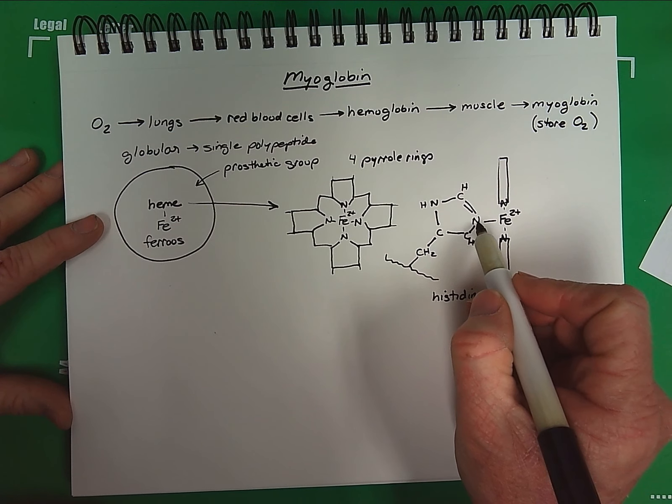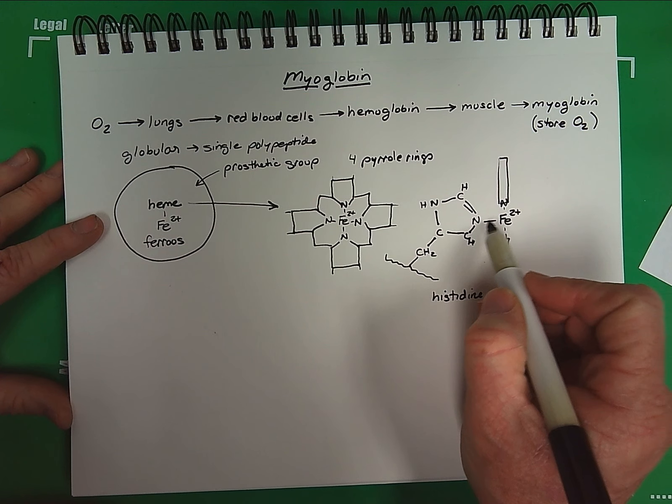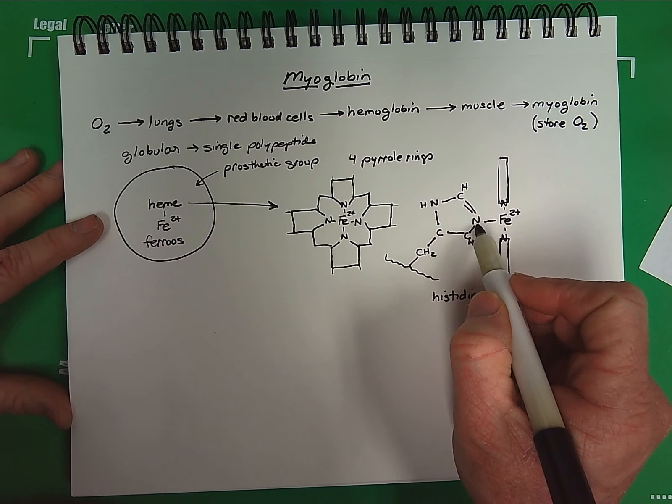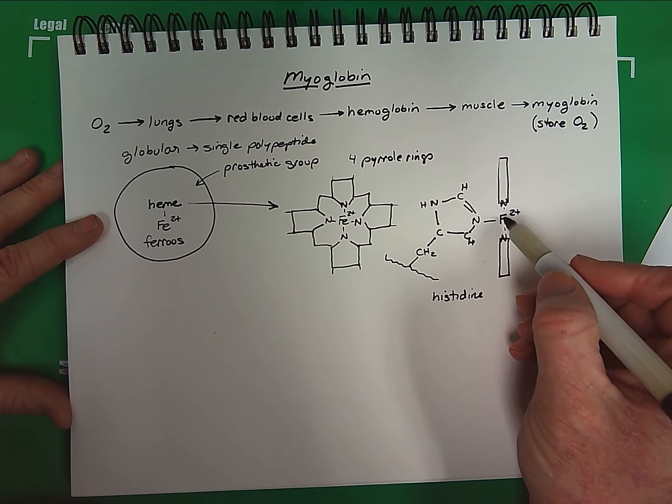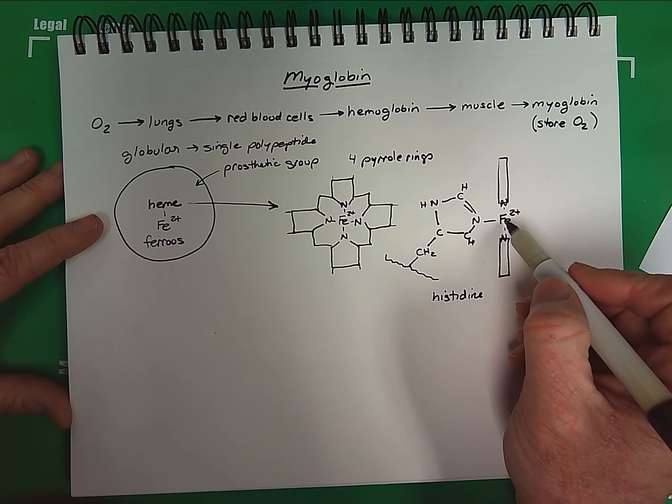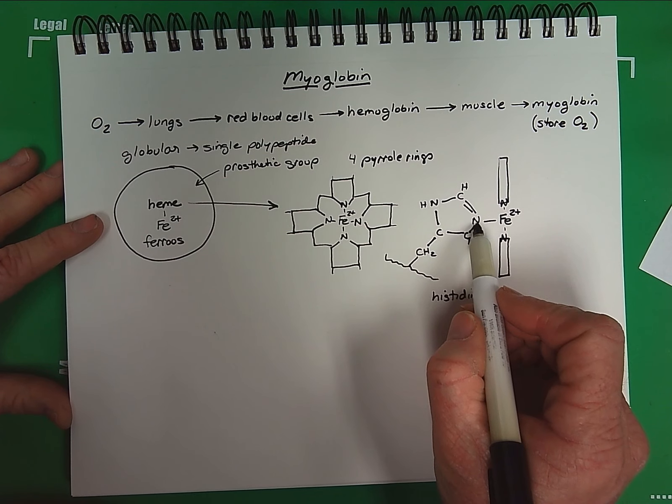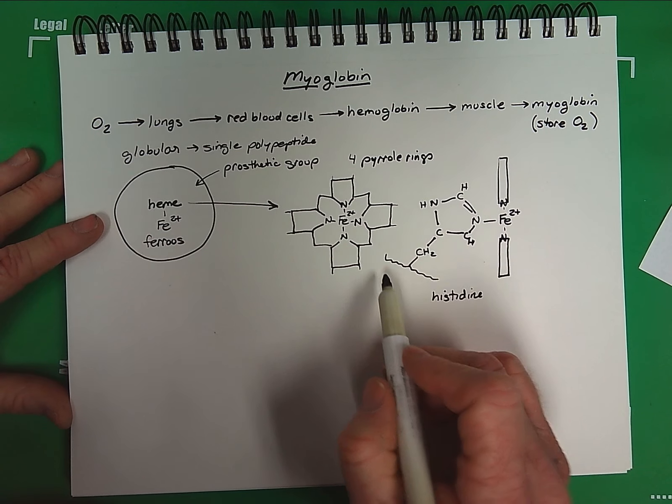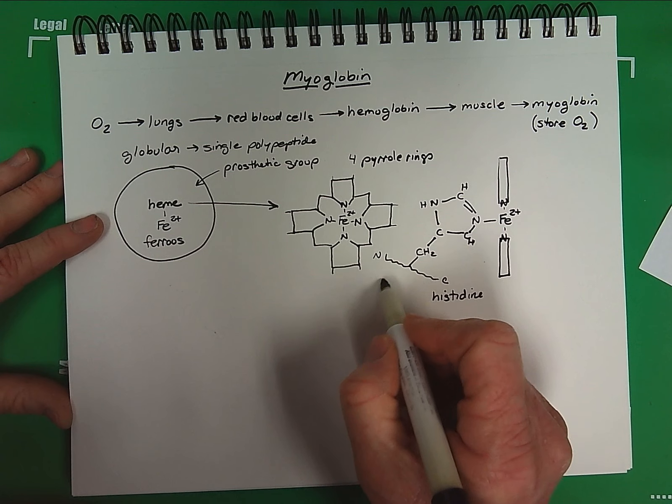Notice that the nitrogen is now able to bind to the iron because the iron is in a 2-plus state. So in addition to the nitrogens on the pyrrole rings binding and coordinating the binding of iron into the heme structure, this iron is also bound covalently to a histidine residue in the polypeptide backbone of myoglobin.